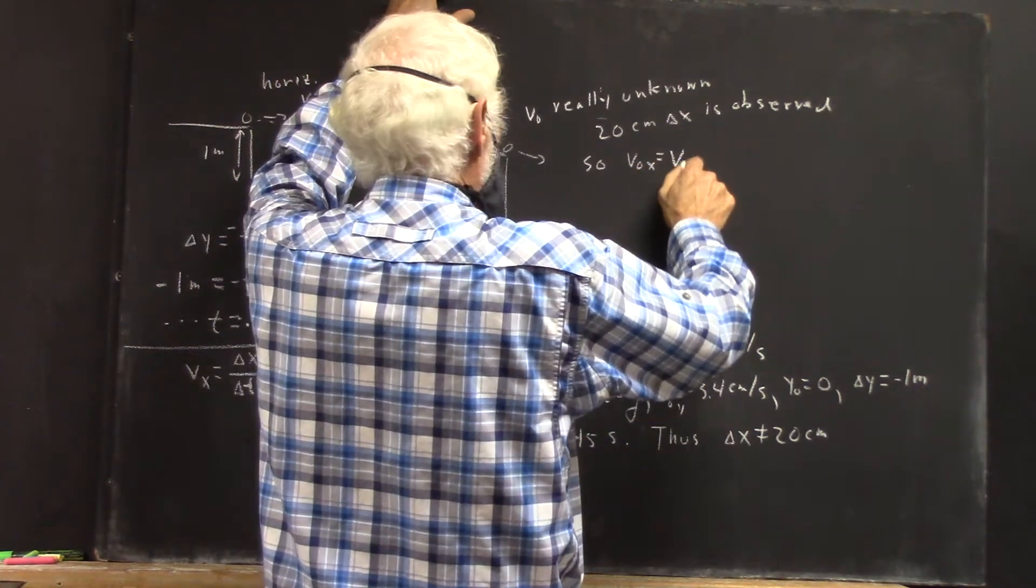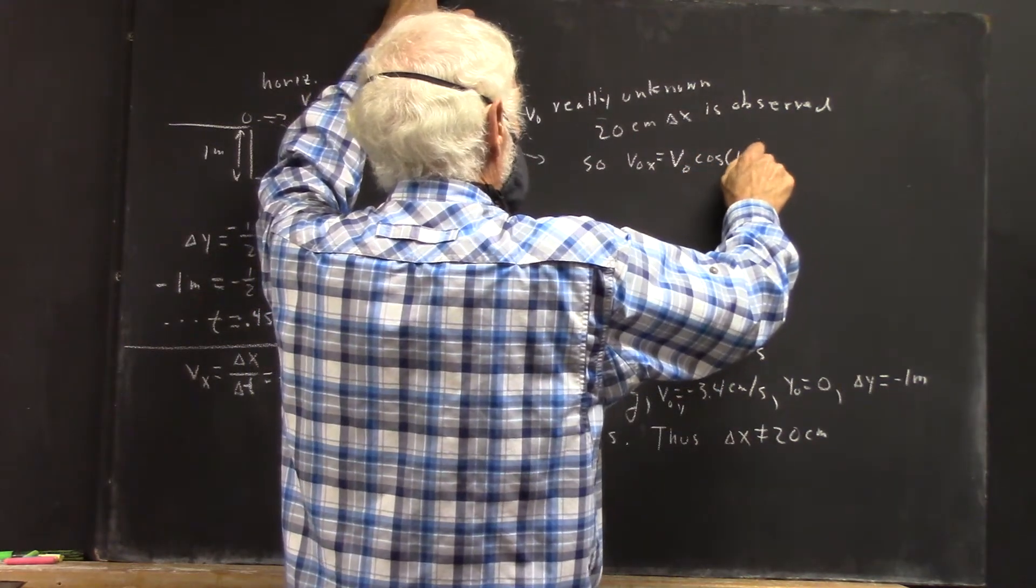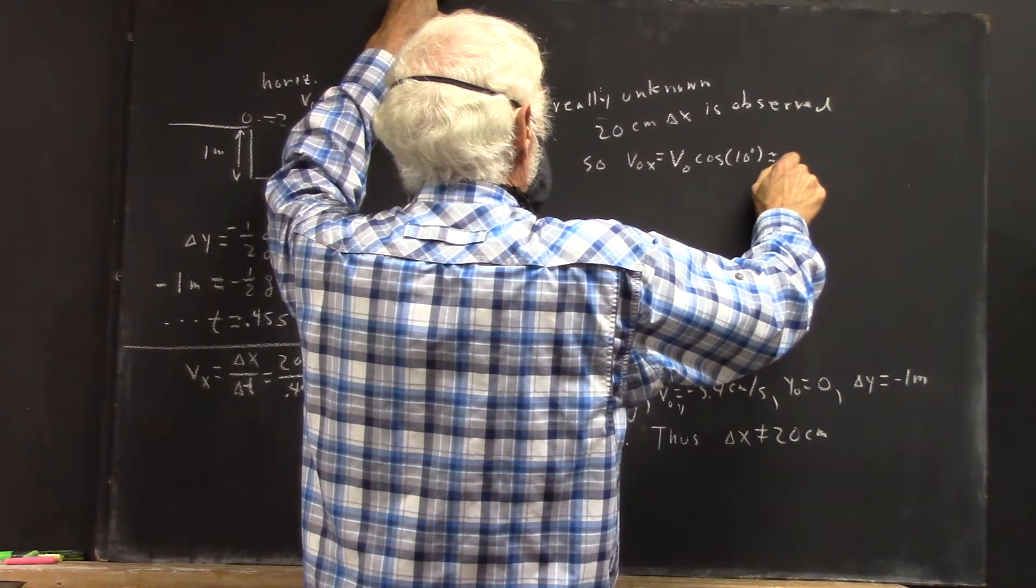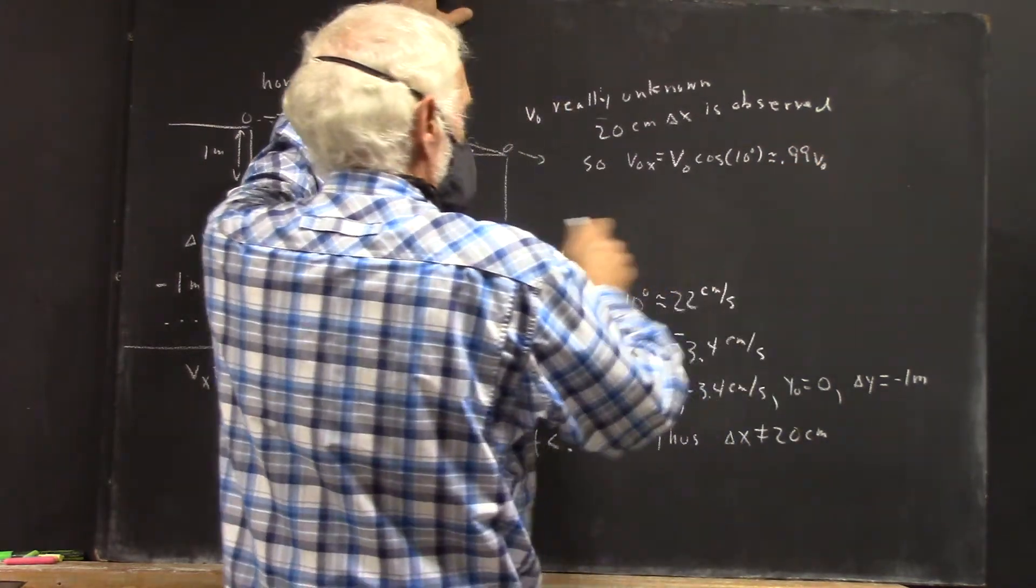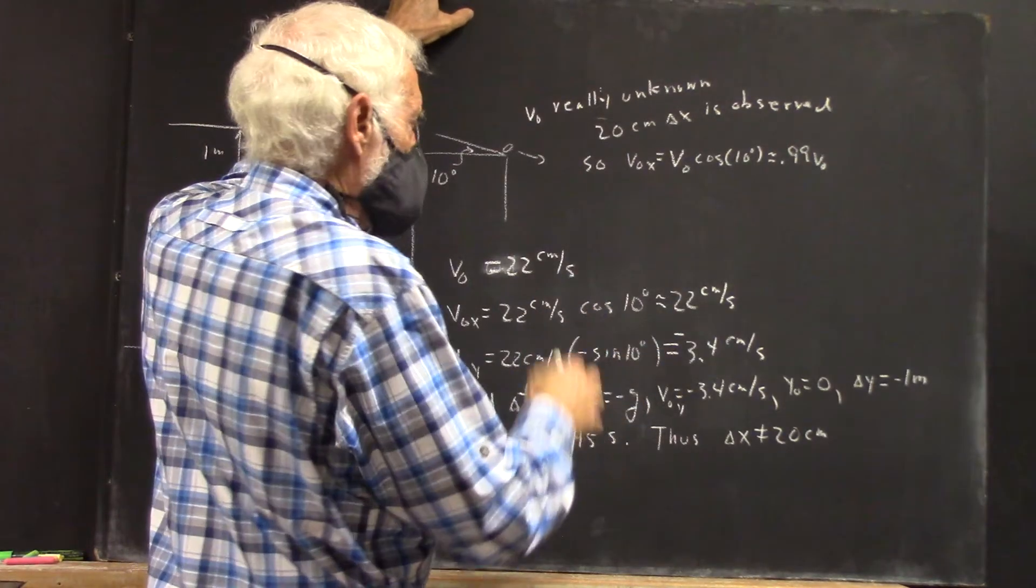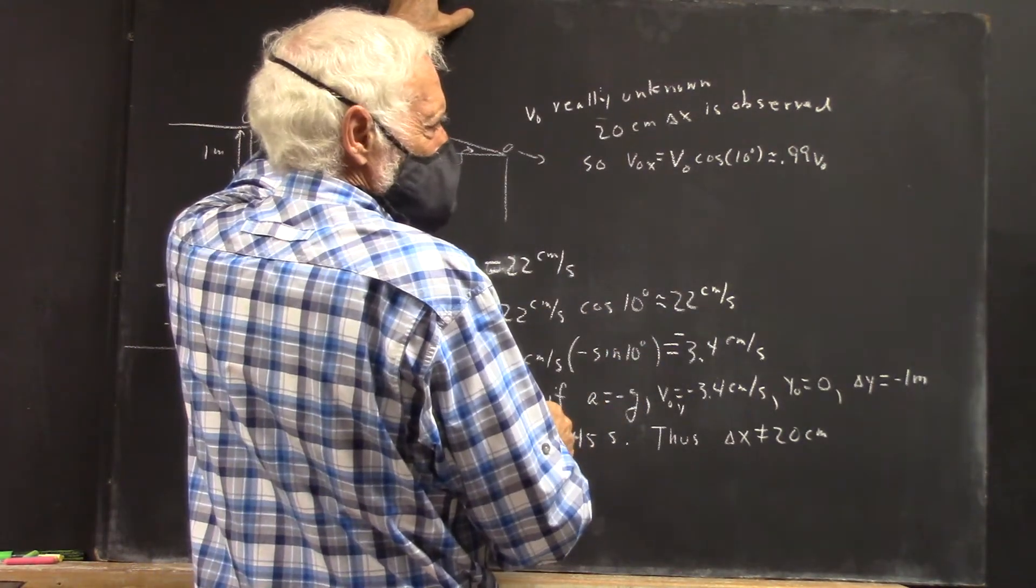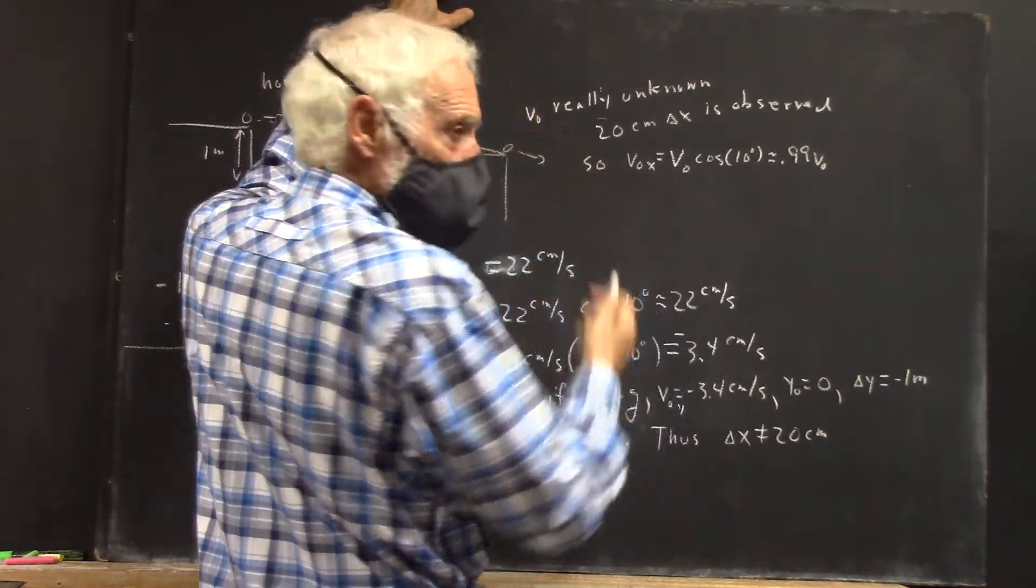So V0x, all you can write is V0 cosine of 10 degrees. Now that's approximately 0.99 V0, I believe. I'll give my final calculations right. It's a little less than 0.99 and 0.987 or something like that. But don't trust that.